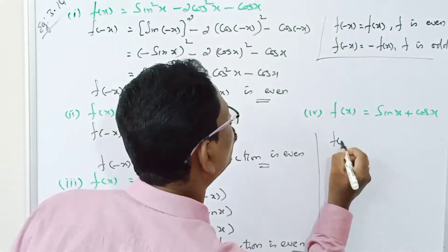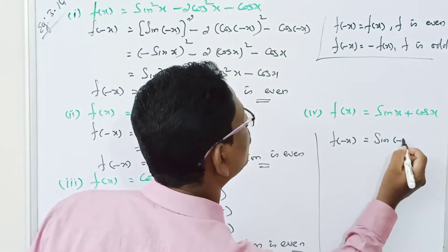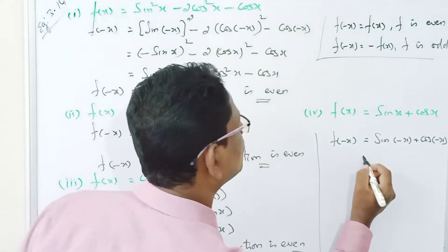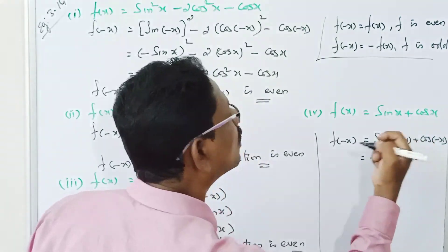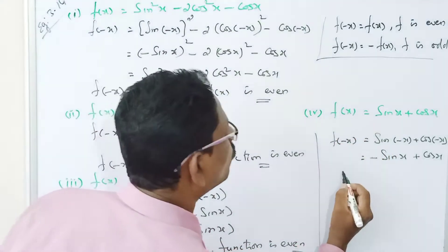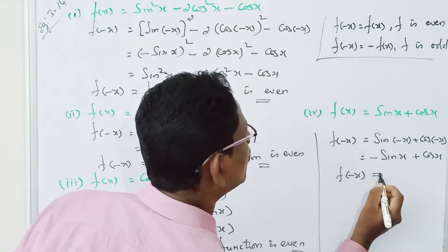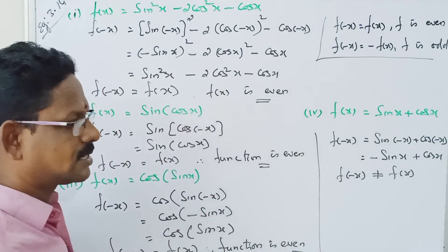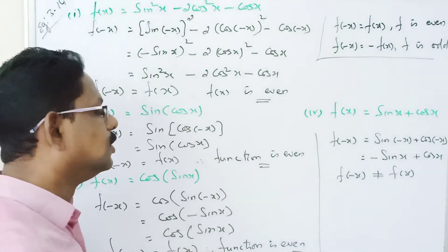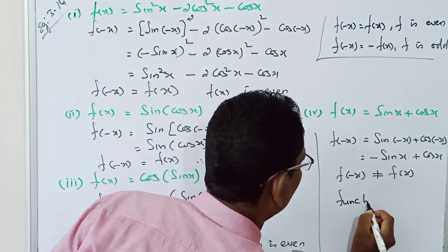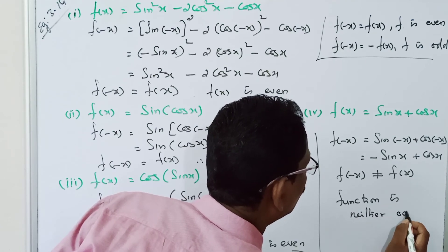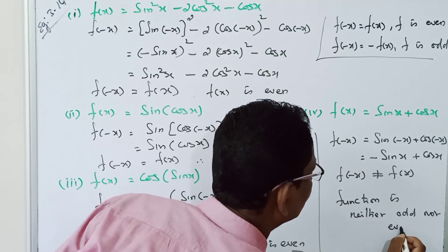For the fourth problem: f of minus x equals sin(minus x) plus cos(minus x). Since sin(minus x) equals minus sin x and cos(minus x) equals cos x, we get minus sin x plus cos x. Therefore f of minus x is not equal to f of x, and f of minus x is not equal to minus f of x. So this function is neither even nor odd.